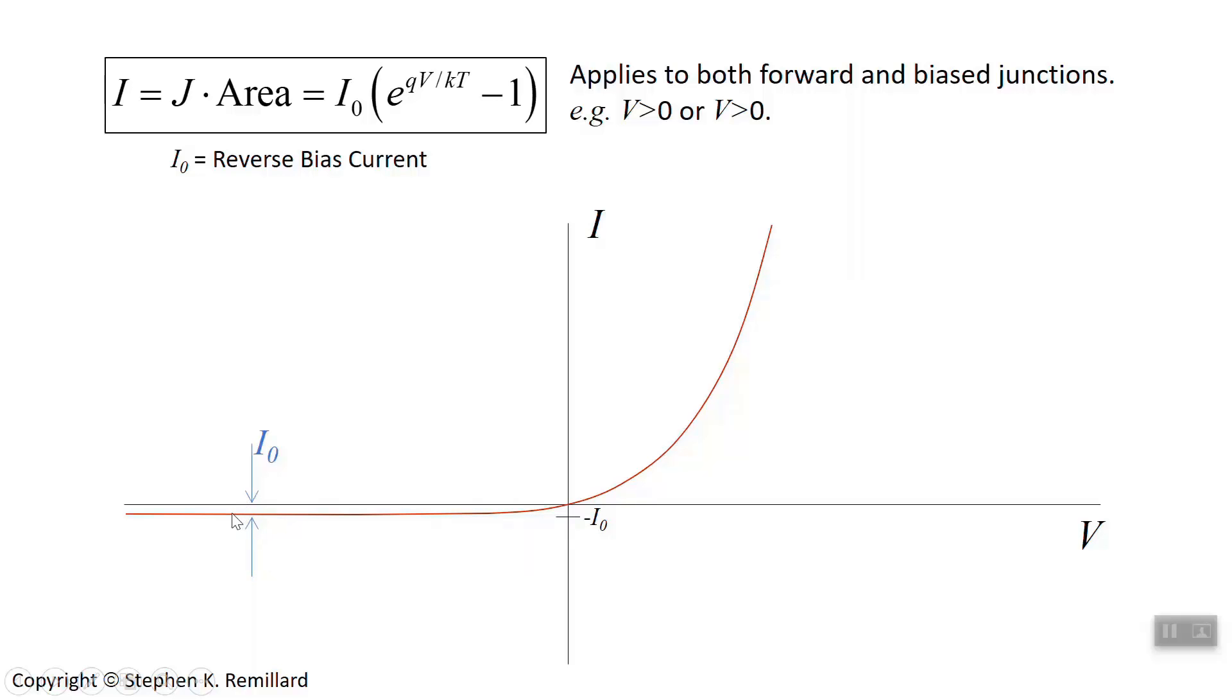Eventually you get to a point where the voltage is high enough that you have a breakdown, junction breakdown. And when that happens,